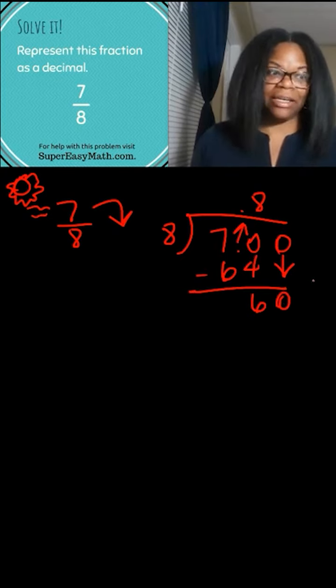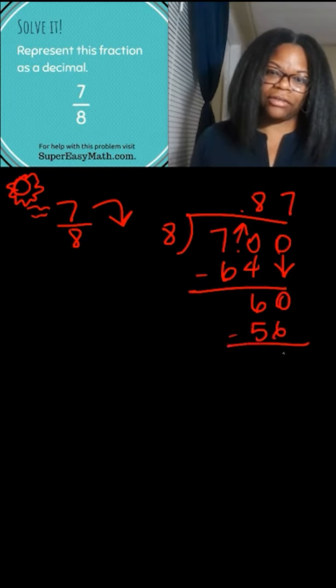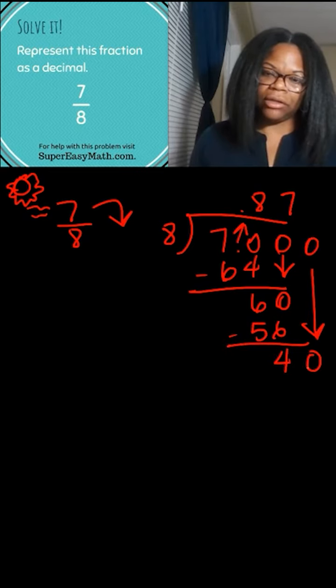So then you ask yourself, how many times does eight go into 60? The answer is seven. So then you have 56, you subtract, you get four, get a zero, bring it down, and you have 40. Then you ask yourself, how many times does eight go into 40? The answer is five. That is 40, you subtract and get a zero.